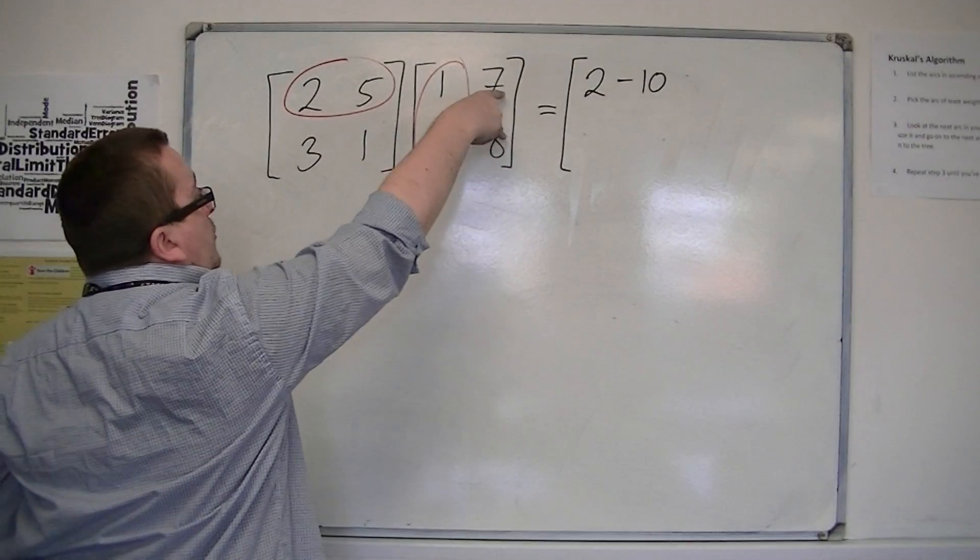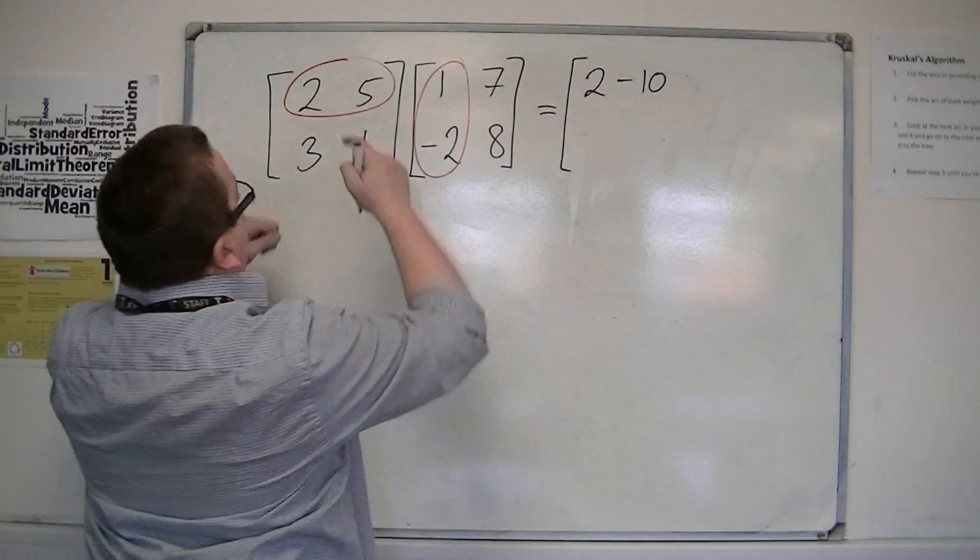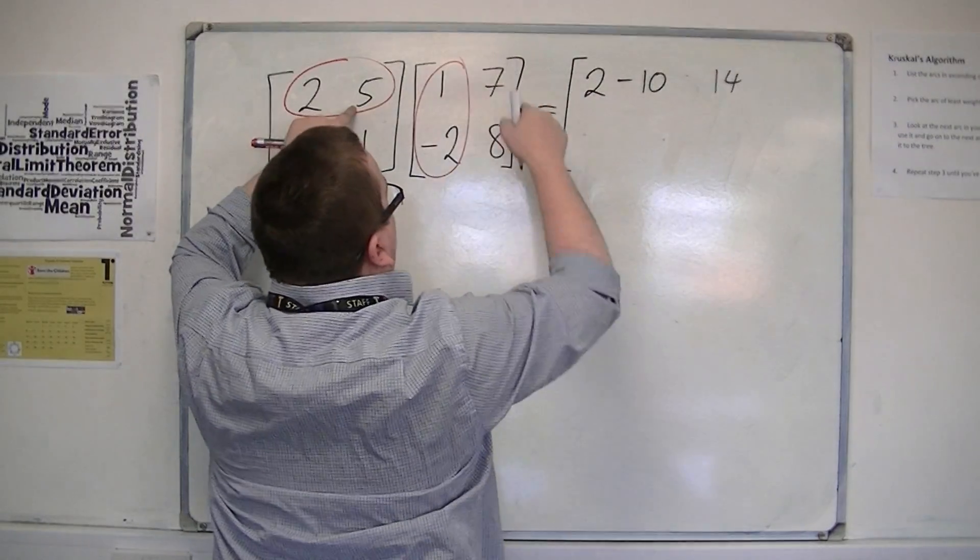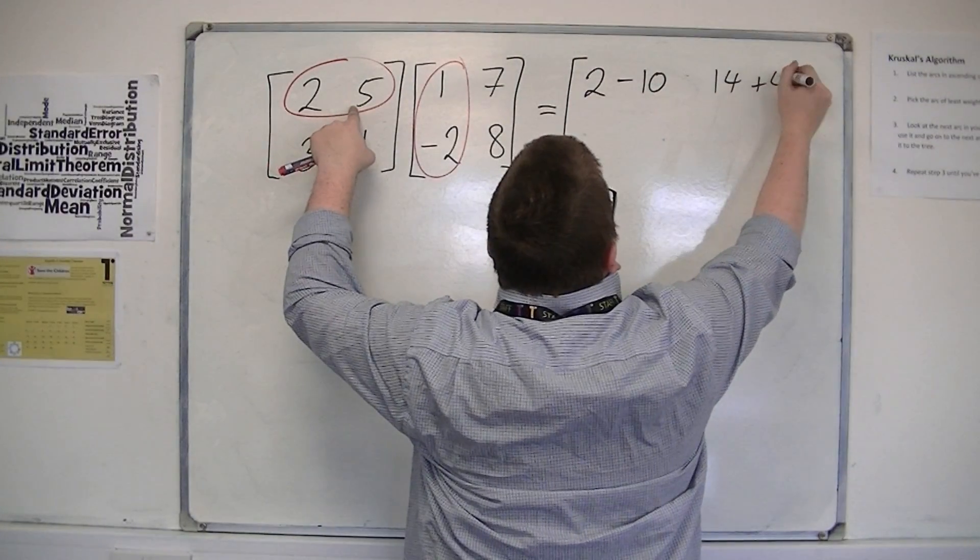we've got 2, 5 multiplied by the 7 and the 8. So 2 times 7 is 14, 5 times 8 is 40, and we add them together.